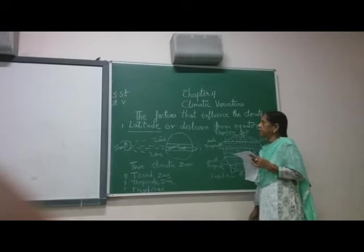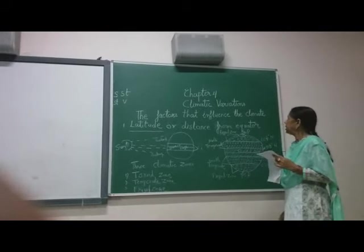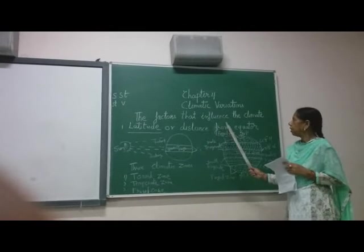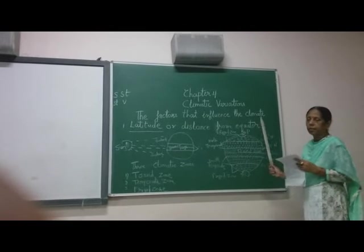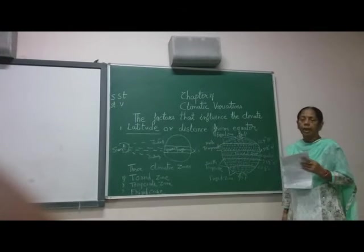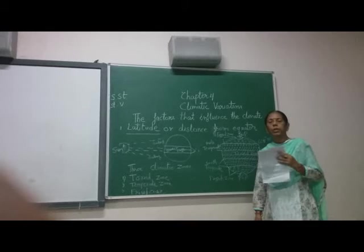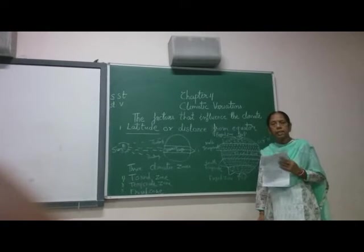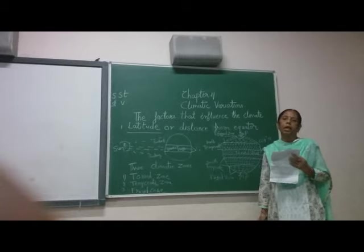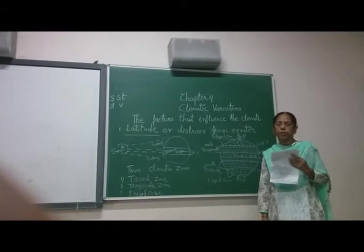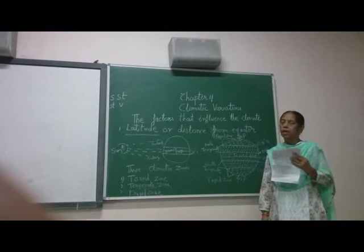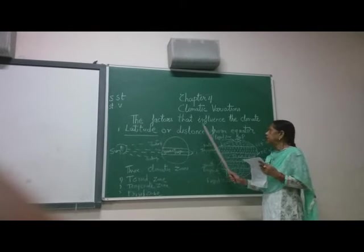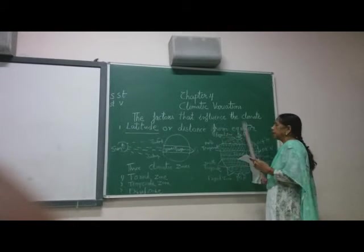The important factors which influence the climate are five. Number one, latitude or distance from the equator. Number two, altitude. Number three, continentality. Number four, distance from the sea. And the last one is ocean currents. Now we are discussing the first point, that is latitude or distance from the equator.